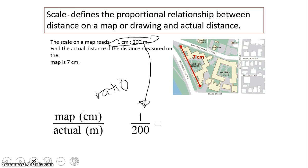Then I'm going to create a second ratio. Now the second ratio must also represent centimeters out of meters. And since I know that the distance on the map is measuring 7 centimeters, I'm going to put that in the numerator and I'm looking for the actual distance, so that's going to be my x.